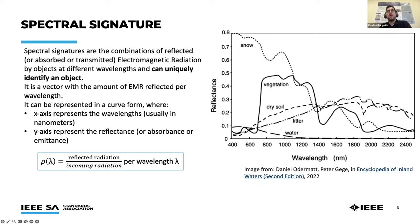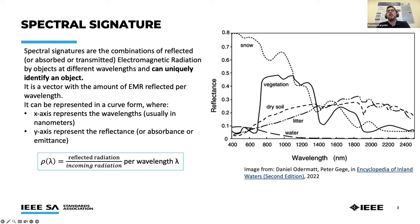Spectral signatures are the combination of reflected, absorbed, or transmitted electromagnetic radiation by objects at different wavelengths, and can uniquely identify objects. It is a vector with the amount of electromagnetic radiation reflected per wavelength, where the x-axis represents wavelengths in nanometers and the y-axis represents reflectance, absorbance, or emittance. Here we can see the constituents most likely found in soil — snow, vegetation, dry soil, litter, or water — and how these have different spectral signatures. Their mix probably gives the spectral signature of the soil.